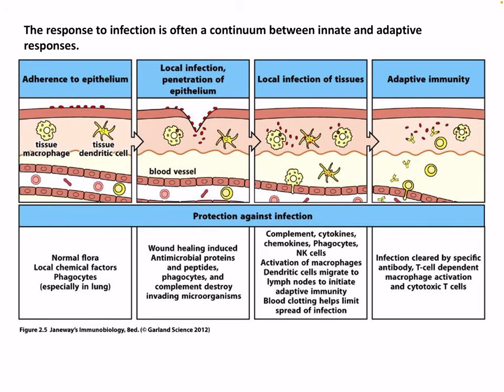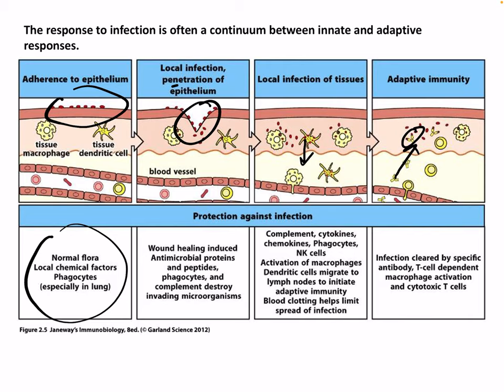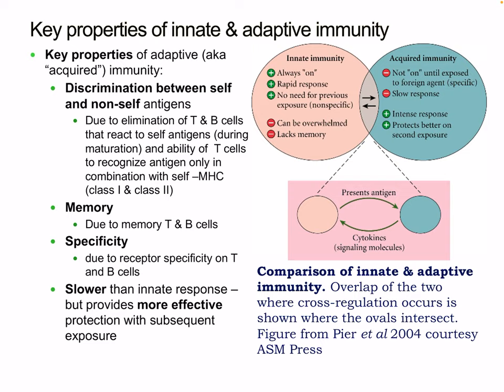The response to infection is a continuum between innate and adaptive immunity. The process begins with microbes breaching the skin, causing a local infection and penetrating the tissues. Normal skin defenses and chemical barriers engage first, along with wound healing and antimicrobial proteins and complement. The innate system then goes to work — complement, cytokines, chemokines, NK cells, and more. Eventually cells communicate with the adaptive immune system, and B and T cells respond, with the infection ultimately cleared by specific antibodies and T cell-dependent macrophages.